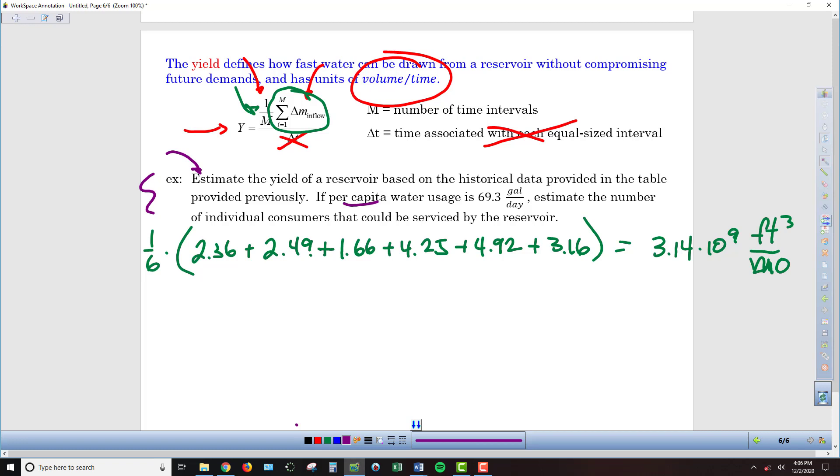We're told that on a per capita basis, that means on a per person basis, water usage is 69.3 gallons per day. Now that may seem like a lot, but that's including everything for this particular community - industrial use, residential use, irrigation for lawns, pools, you name it. So we've got this 69.3 gallons per day per customer. So really the units on that are 63.9 gallons per day per customer.